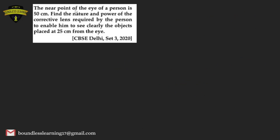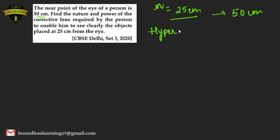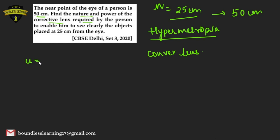Next question: the near point of a person's eye is 50 cm. The normal near point is 25 cm. Since the near point has increased to 50 cm, this is hypermetropia (long-sightedness). We will use a convex lens for correction. The image distance is −50 cm and object distance is −25 cm (normal near point).